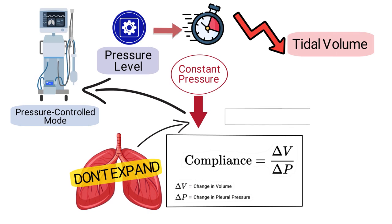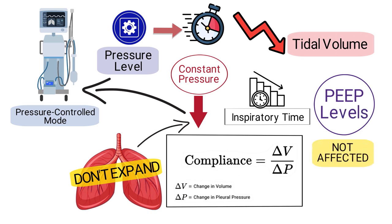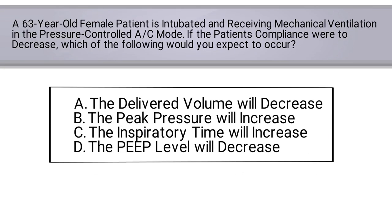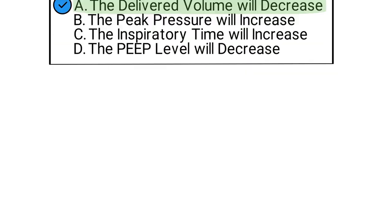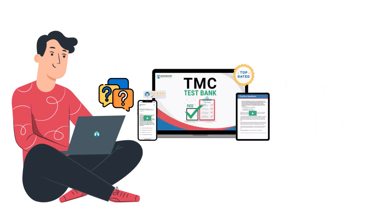Also in this case, the inspiratory time would decrease and the PEEP levels would not be affected. So by breaking down the question and all the answer choices, we can determine that the correct answer is A — the delivered volume will decrease.